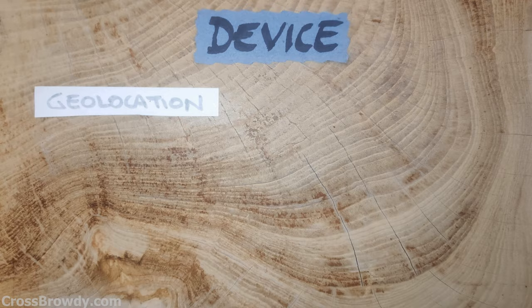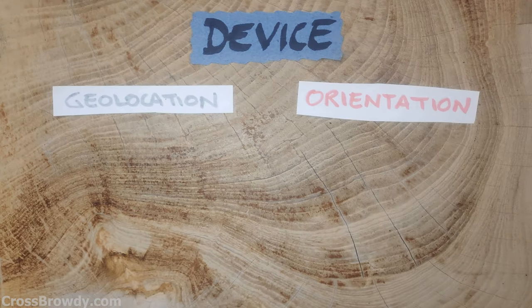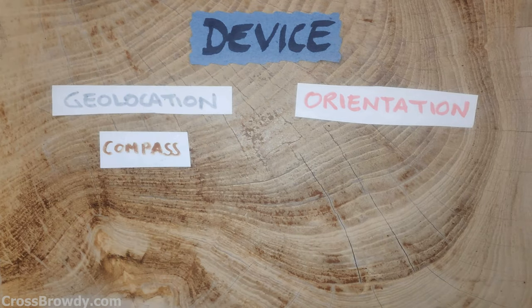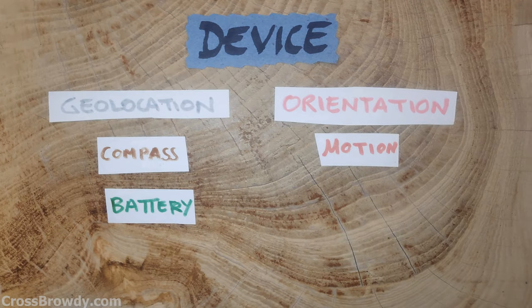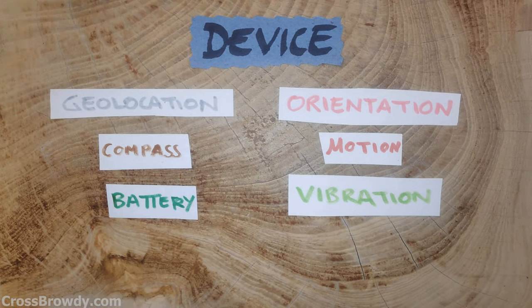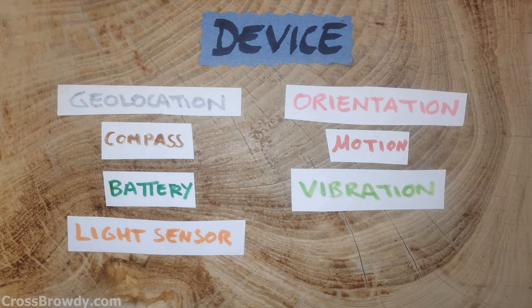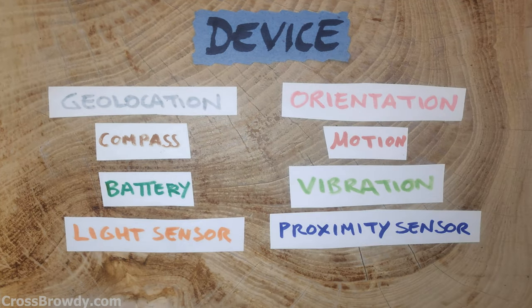Device: geolocation, orientation, compass, motion, battery, vibration, light sensor, proximity sensor, and more.